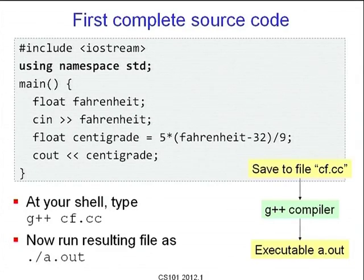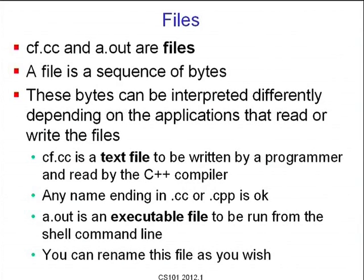This is a text file you submit to the G++ compiler. G++ cf.cc outputs a file called a.out. This is another file you cannot read — it is an executable file. So cf.cc and a.out are files; a file is just a sequence of bytes, and until you try to use it, it does not matter what that sequence of bytes is. This sequence of bytes is interpreted differently depending on who is reading or writing it. cf.cc is written by a programmer and read by the C++ compiler; a.out is an executable to be run from the shell command line, and you can rename it as you wish.